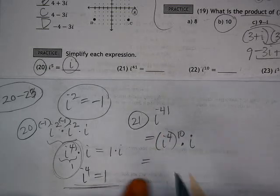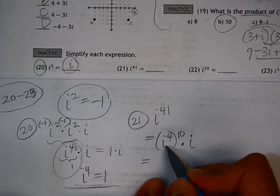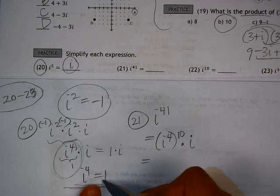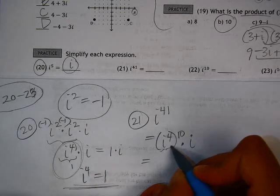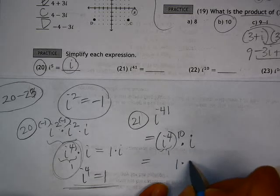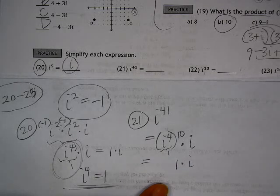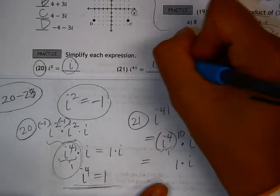And what makes this really easy now is that we just decided here that i to the fourth equals 1. So 1 to the 10th is just equal to 1 times i. So i to the 41 is also equal to i.